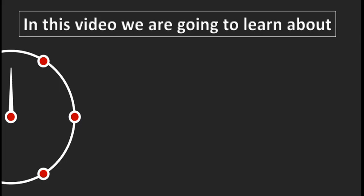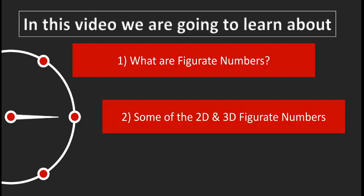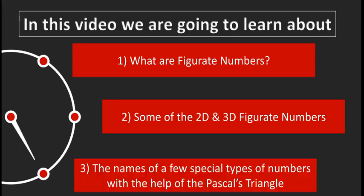In this video, we are going to learn about: Number 1 — what are figurate numbers; Number 2 — some of the 2D and 3D figurate numbers; and Number 3 — the names of a few special types of numbers with the help of Pascal's triangle.